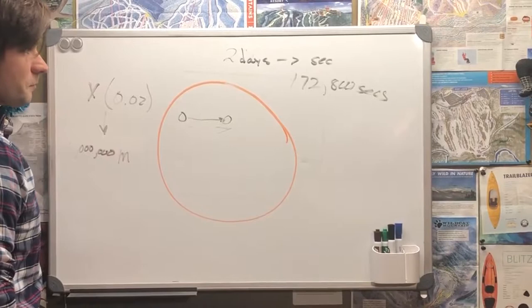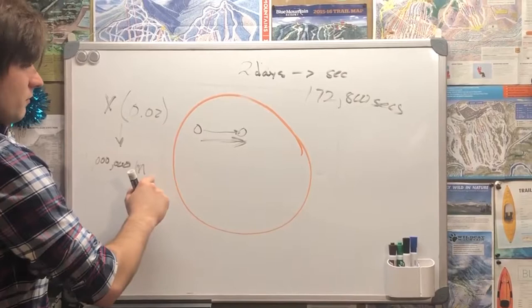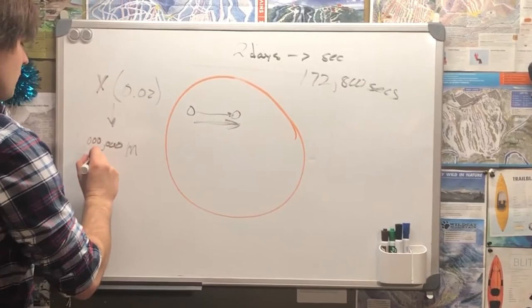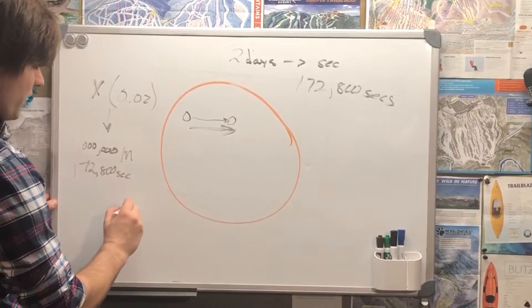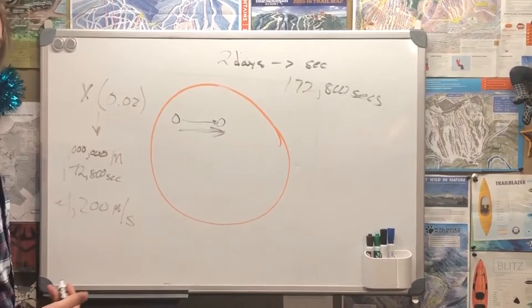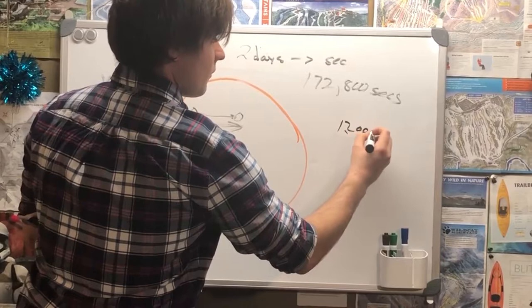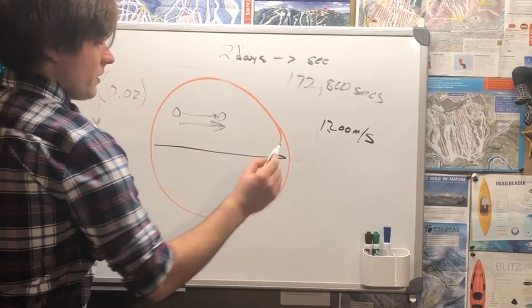Then to get the velocity, we just want to divide how long it took or this distance by how long it took to go that distance, which in this case, all the videos are over two days, so we're just going to divide by that. We're going to get some number in meters per second. When I did mine, I got about 1,200 meters per second. Like I said, it's a rough estimate. I got 1,200 meters per second for my object. I picked a sunspot.